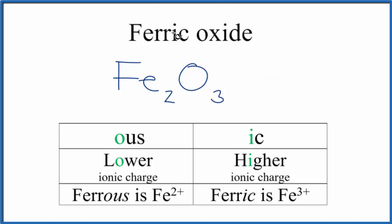To write the formula for ferric oxide, you need to know that when you see 'ferric', iron can be either 2+ or 3+. Since we have the 'ic', it's going to be the higher ionic charge. This is Dr. B with the formula for ferric oxide, Fe2O3. Thanks for watching.